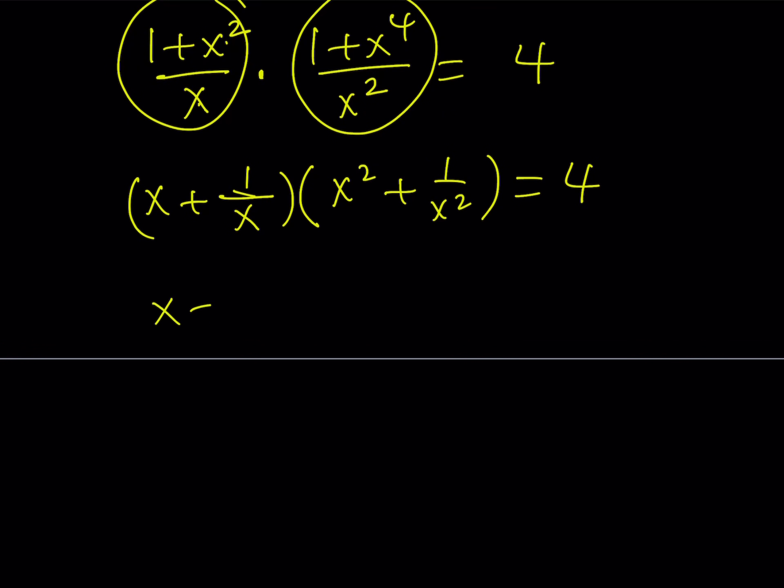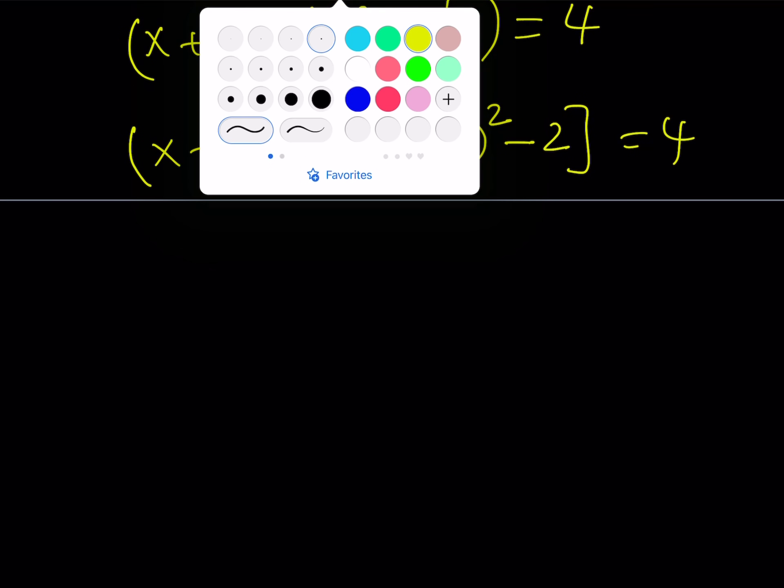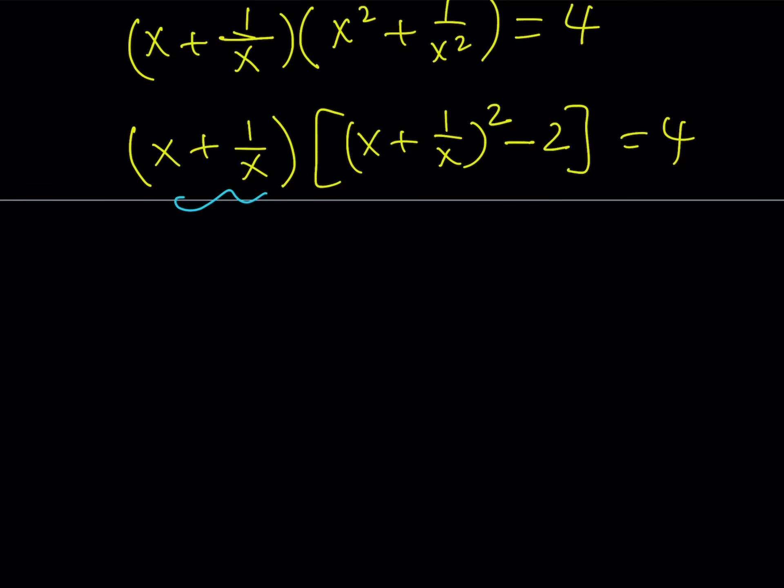Now, obviously, x squared plus 1 over x squared can be written as x plus 1 over x squared minus 2 times x times 1 over x, but it's just 2, and we can write it like this. Now, this calls for substitution, obviously, right? So, we're going to call this u, or y, whatever you want to call it. Let's call it y. Okay.